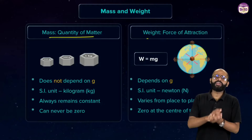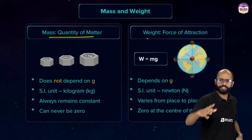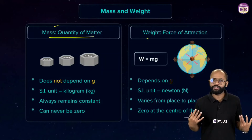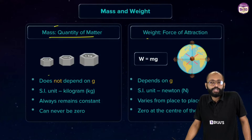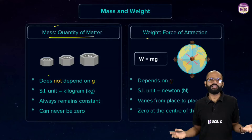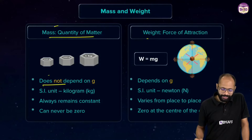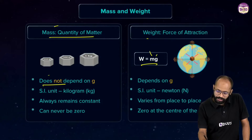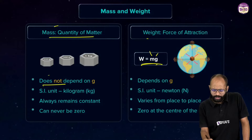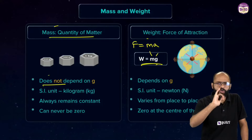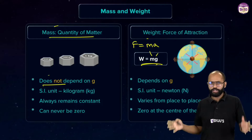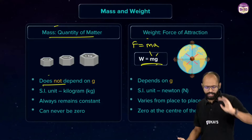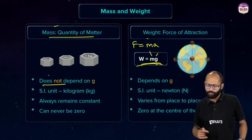Weight is the force of attraction — at least on earth, or it could be between any planet or heavenly body and the mass. The force that earth exerts on you is your weight. Mass does not depend on g — the acceleration due to gravity — but weight depends on g. Weight equals mass times acceleration due to gravity. This formula is just F = ma, where we call the force 'weight' and the acceleration 'g'. So W = mg.